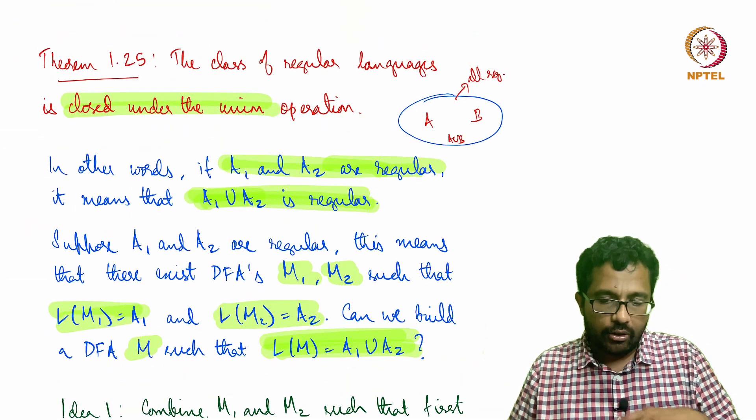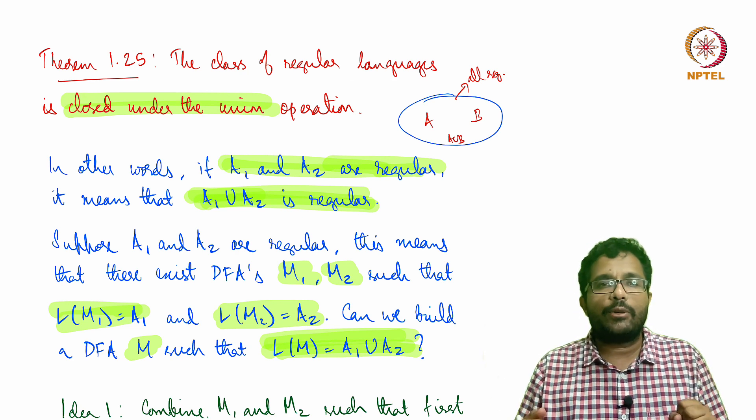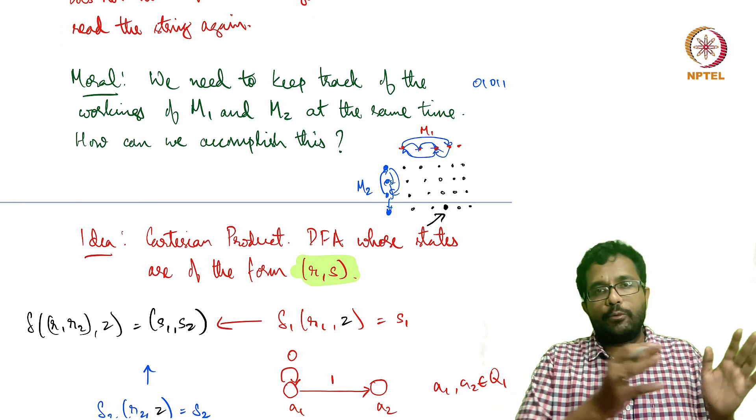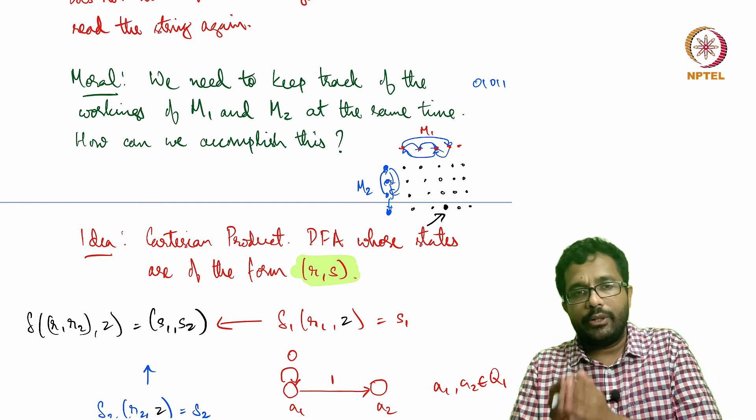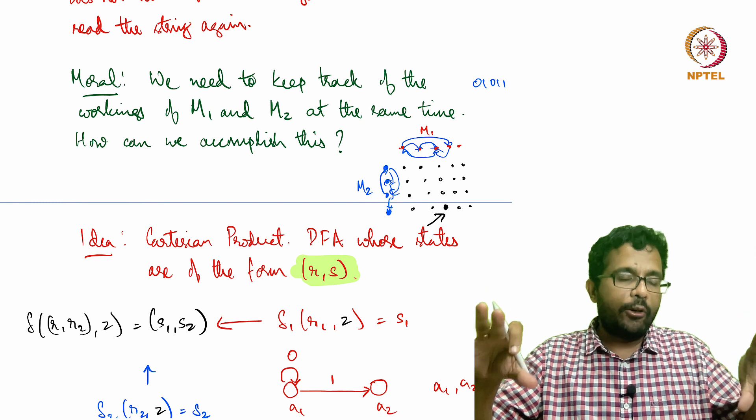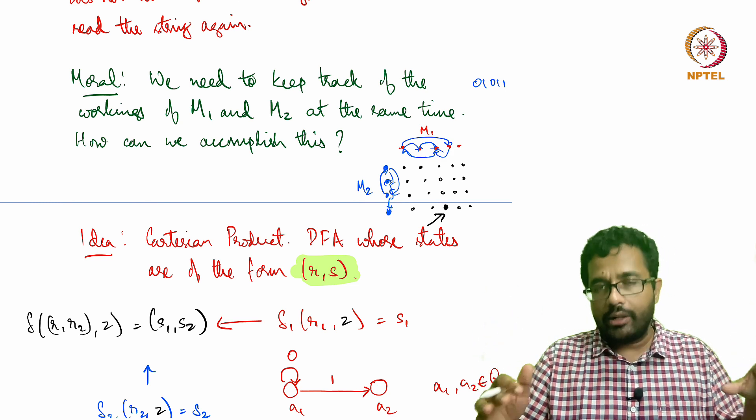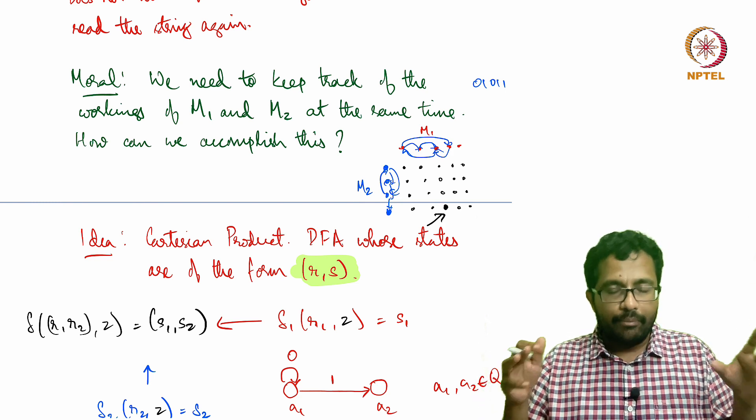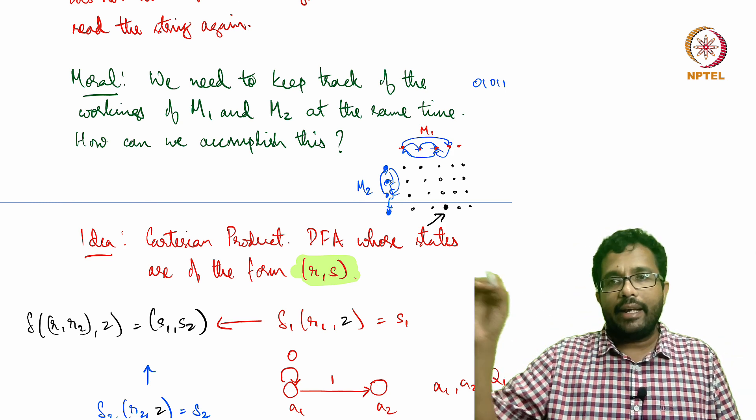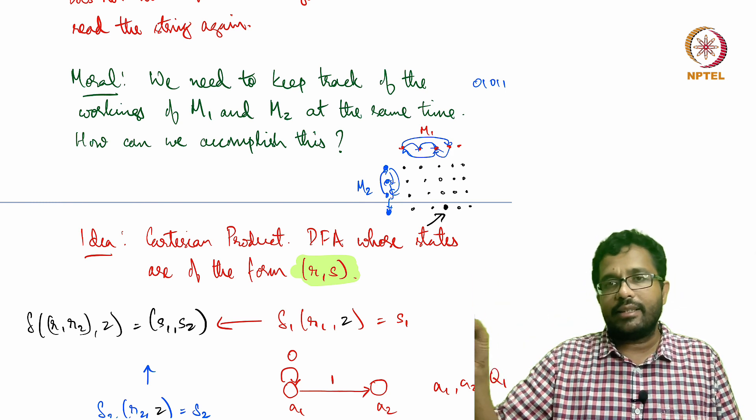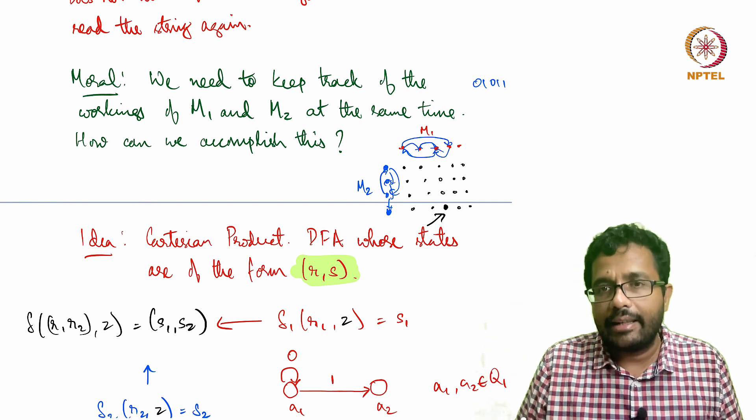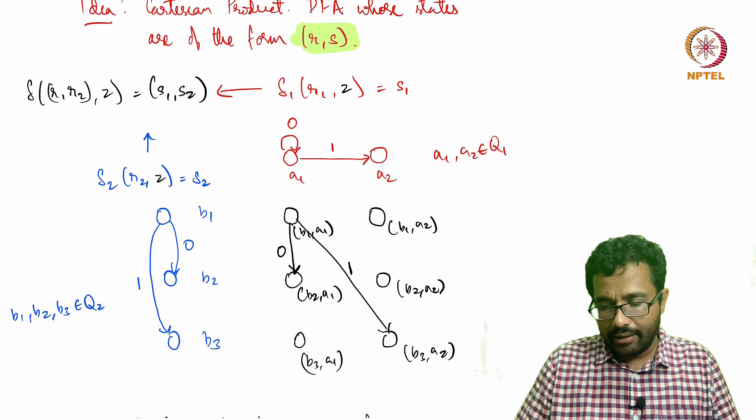Let me just summarize what we just saw in this lecture. We want to show that the class of regular languages are closed under the union operation. We made this DFA which is a Cartesian product. Suppose M1 is the DFA of A1 and M2 is a DFA of A2—we made a DFA M which replicates M1 and M2. If M1 has 10 states and M2 has 4 states, that machine, the DFA M has 10 times 4, 40 states. It keeps track of where, what M1 does with a certain string and what M2 does with a certain string as well.